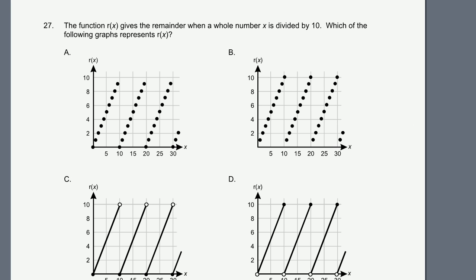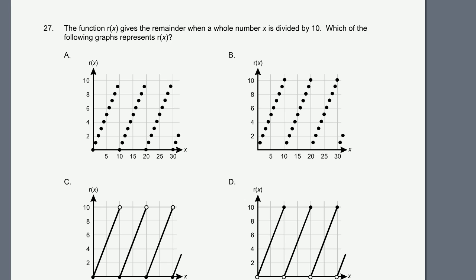Next problem. Problem 27. The function r(x) gives the remainder when a whole number x is divided by 10. All right, when a whole number, OK. Which of the following graphs represents r(x)? So when you take something on the x-axis and divide it by 10, r(x) should be its remainder. So when you take 5 divided by 10, the remainder is 5. So it should plot out to be a 5 right there. When you take 10 divided by 10, your answer is 1, and your remainder is 0. So that looks right. And then 15, the remainder is 5. So those look right. Let's see, when you have 1 divided by 10, the remainder is 1. So that looks right. This graph A looks pretty good.